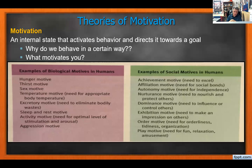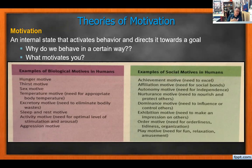Some motivations are biological — things you physically need: hunger, thirst, sex. When we talk about Maslow's hierarchy, sex isn't necessarily a motivator for everyone — a four-year-old isn't driven by sex. Temperature, going to the bathroom, sleep, wanting to be active — these are all biological.